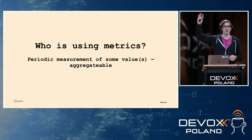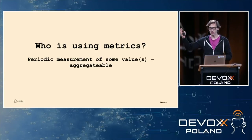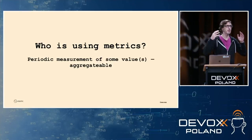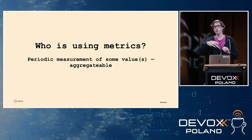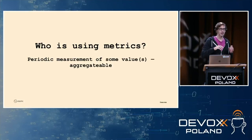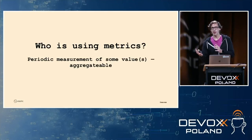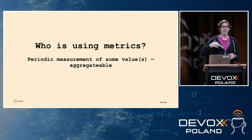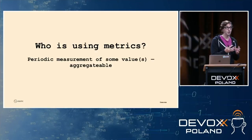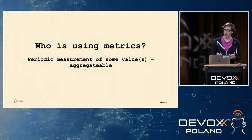Next up, who is using metrics? That's probably fewer but still a lot. Metrics give you periodic measurement of something — like heap usage in Java, CPU usage, network. You get a nice overview, and the good thing is it's aggregatable, so you can see how the system is behaving in general. What's very hard with metrics is figuring out why something is bad. You can see high heap usage, but that number alone makes it hard to pinpoint why the heap is high.